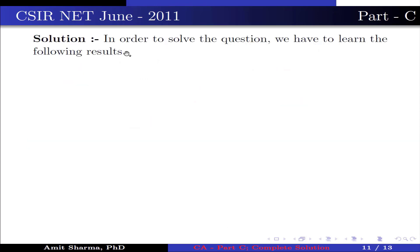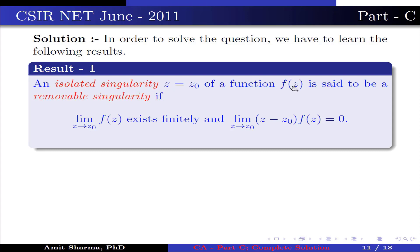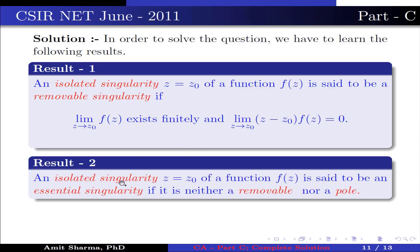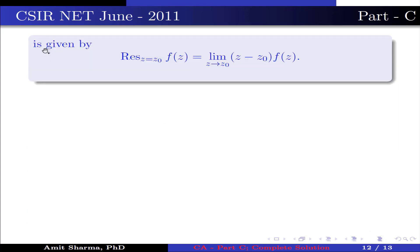To solve, we need the following results. Result 1: z = z₀ is a removable singularity if limit z→z₀ f(z) exists finitely and limit z→z₀ (z - z₀)·f(z) = 0. Result 2: z = z₀ is an essential singularity if it is neither removable nor a pole. Result 3: if z = z₀ is a simple pole, then Res_{z=z₀} f(z) = limit z→z₀ (z - z₀)·f(z). Given f(z) = (e^z + 1)/(e^z - 1).